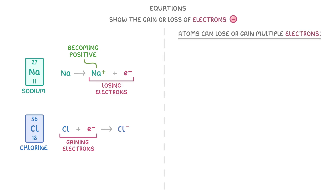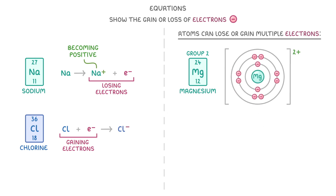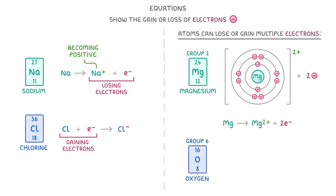Sometimes atoms will lose or gain multiple electrons. So for atoms like magnesium in group 2, they'll form a 2+ ion and 2 electrons, so we would write Mg → Mg2+ + 2e-. Or for an example of a group 6 element, we could take oxygen and write that O + 2e- → O2-.